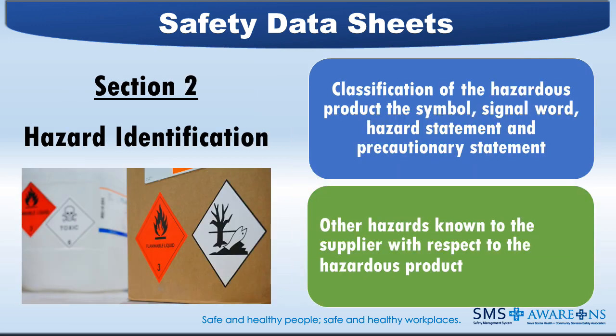Section 2 — Hazard Identification is the most important section, which provides a summary of all hazards associated with the chemical. Special pictograms are used in this section to broadly identify typical hazards. All broad hazards are divided into specific categories, which are further ranked according to their severity by number, with category 1 chemicals considered the most dangerous. Requirements consist of classification of the hazardous product — for example, carcinogenicity would be category 1 — the symbol, signal word, hazard statement, and precautionary statement for each of the applicable classes. If the required information element is a symbol, either the name of the symbol or the symbol itself may be used, and other hazards known to the supplier with respect to the hazardous product.